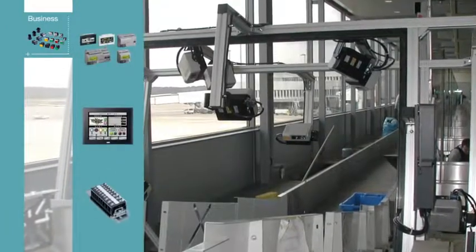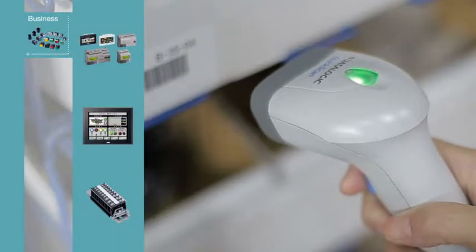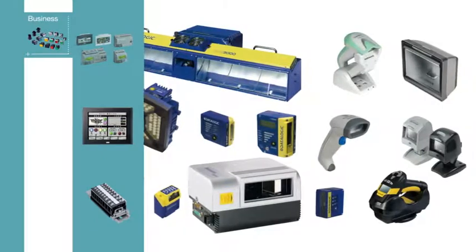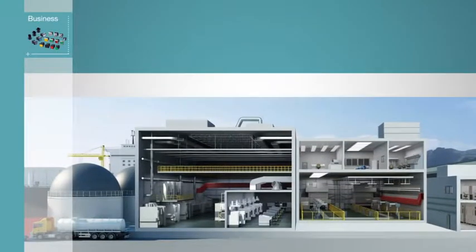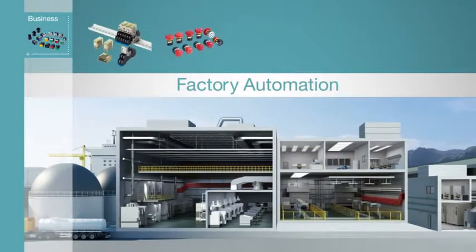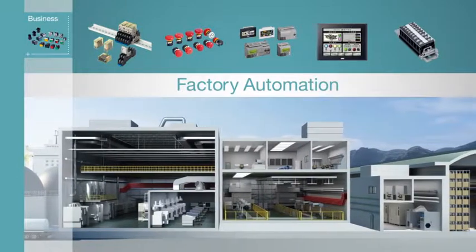Our automatic identification and data capture products, such as laser markers and barcode readers, and other products enabling traceability, are essential for modern automation. These IDEC products provide both quality and flexibility in factory automation.